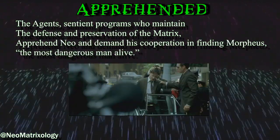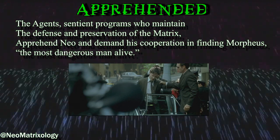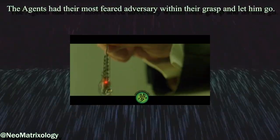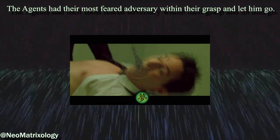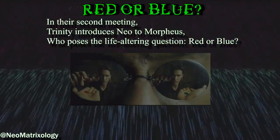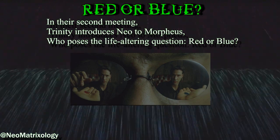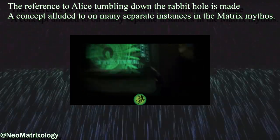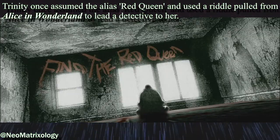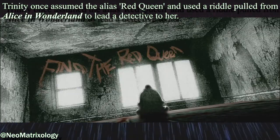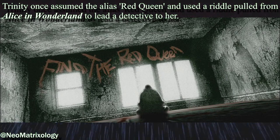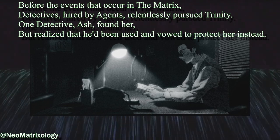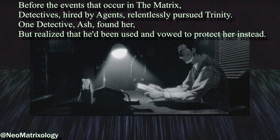Apprehended — the Agents, sentient programs who maintain the defense and preservation of the Matrix, apprehend Neo and demand his cooperation in finding Morpheus, the most dangerous man alive. The Agents had their most feared adversary within their grasp and let him go. Red or Blue: in their second meeting, Trinity introduces Neo to Morpheus who poses the life-altering question — red or blue. The reference to Alice tumbling down the rabbit hole is made, a concept alluded to on many separate instances in the Matrix mythos. Trinity once assumed the alias Red Queen and used a riddle pulled from Alice in Wonderland to lead a detective to her. Before the events that occur in the Matrix, detectives hired by Agents relentlessly pursued Trinity. One detective, Ash, found her but realized that he'd been used and vowed to protect her instead.